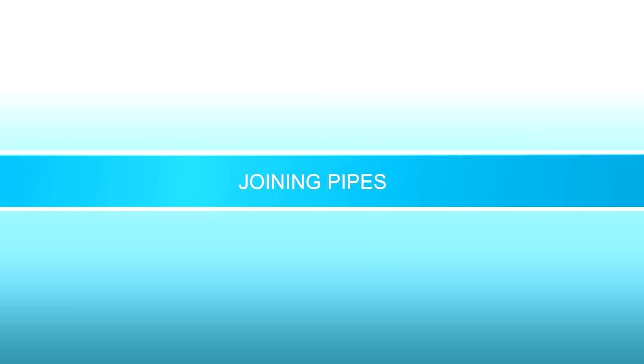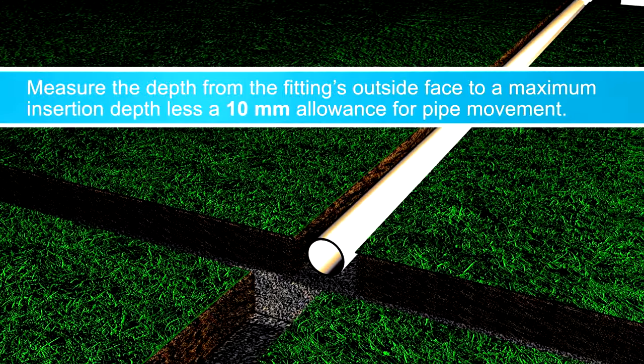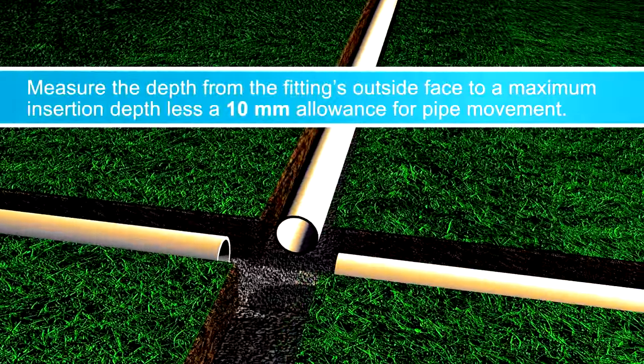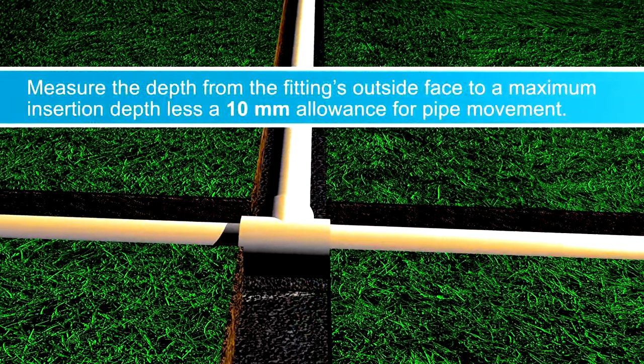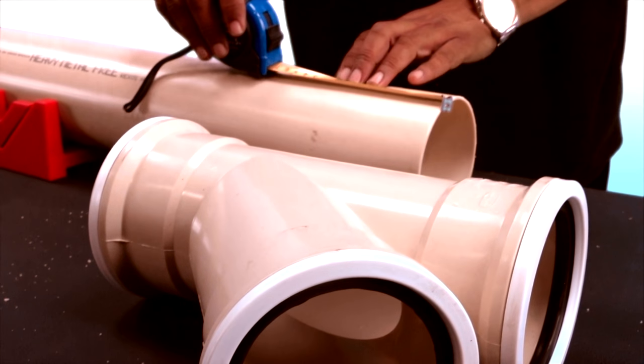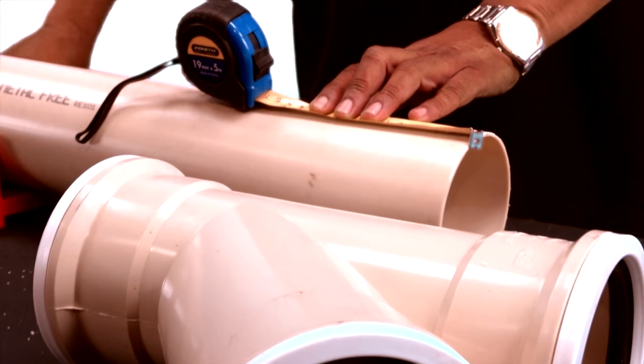Before joining fittings, plan out where all pipes and fittings will go. The lip-seal jointing system allows high-integrity joints to be made quickly and easily. First, determine the insertion depth and mark it with a permanent marker.